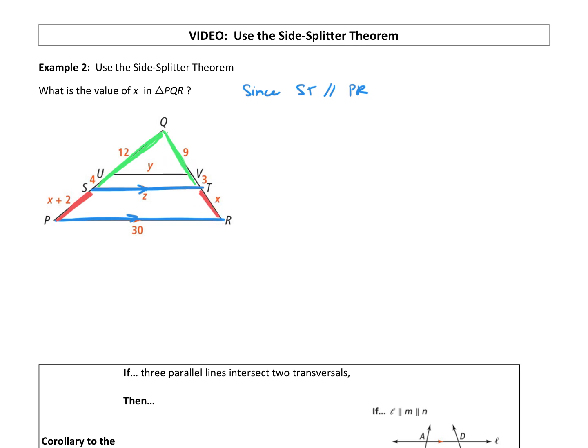So what the side splitter theorem lets us do is, or tells us, that we have a proportion we can set up. So PS over SQ, that's a P right there. So if we take one segment over the other segment from that split right there, that will be equal to the same ratio on the other side.